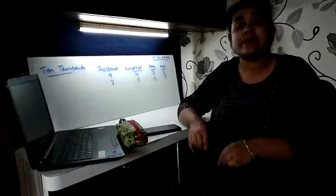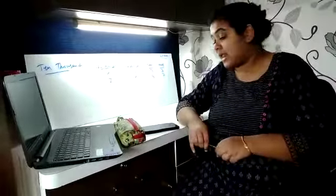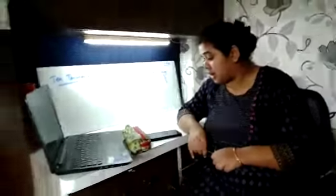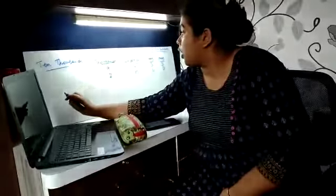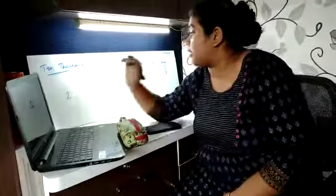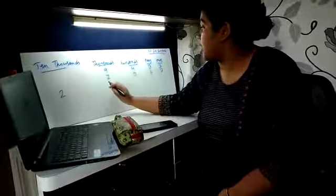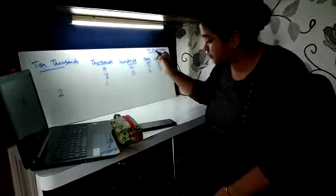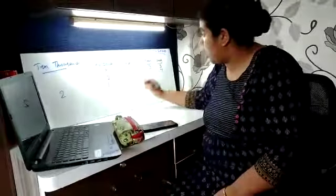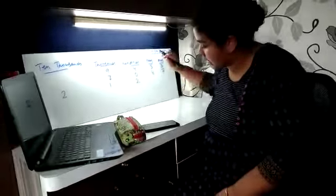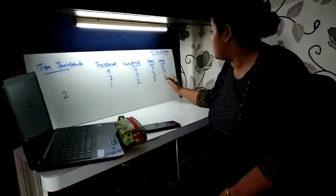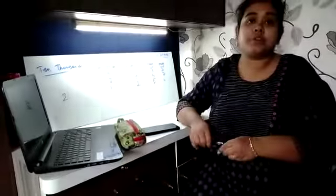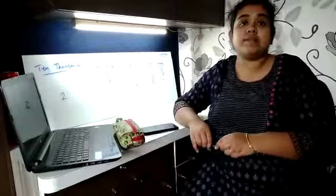Is it clear everyone? Next one: 21254. That means 20,000 plus 1,000 plus 200 plus 50 plus 4. In this way we will continue these sums.